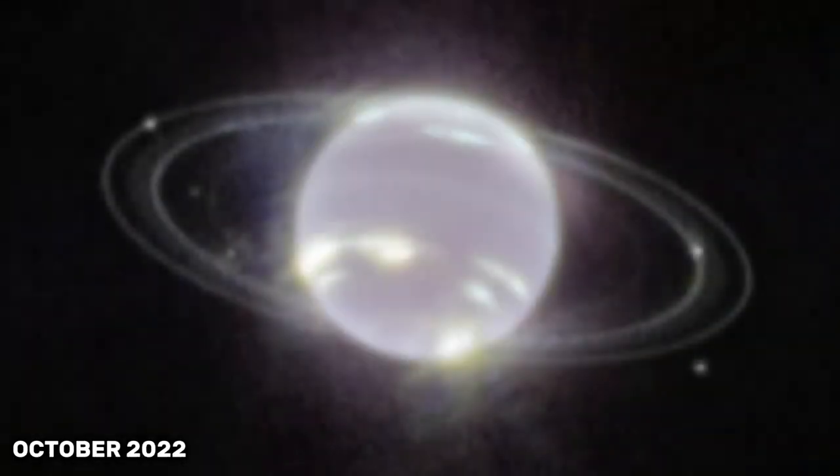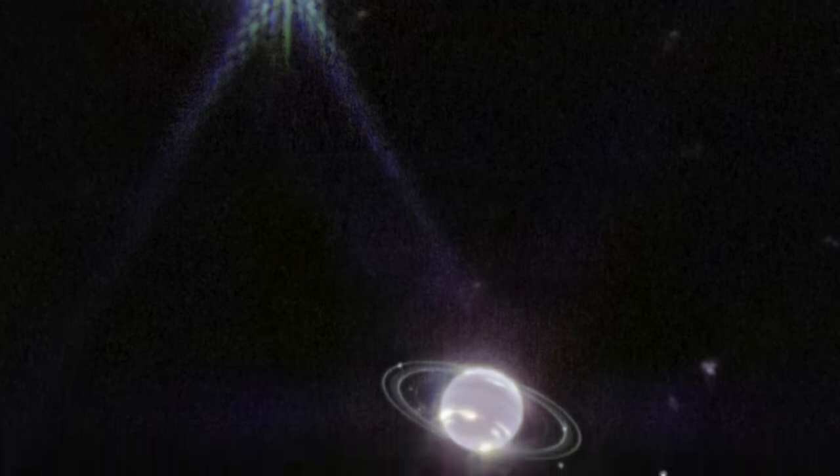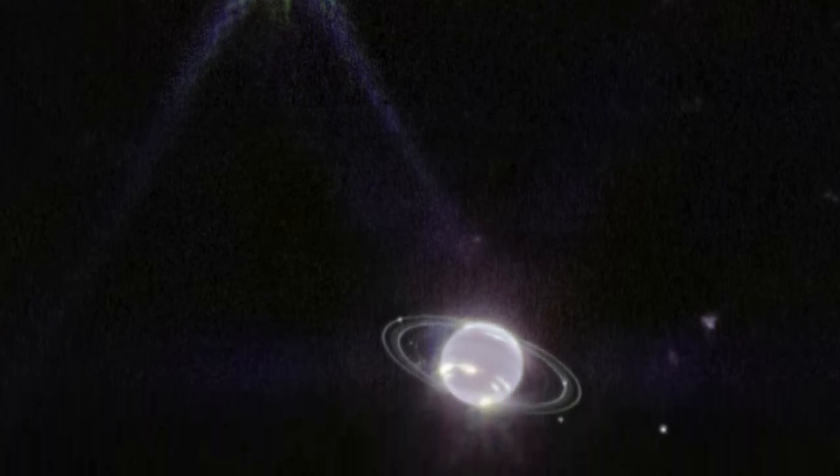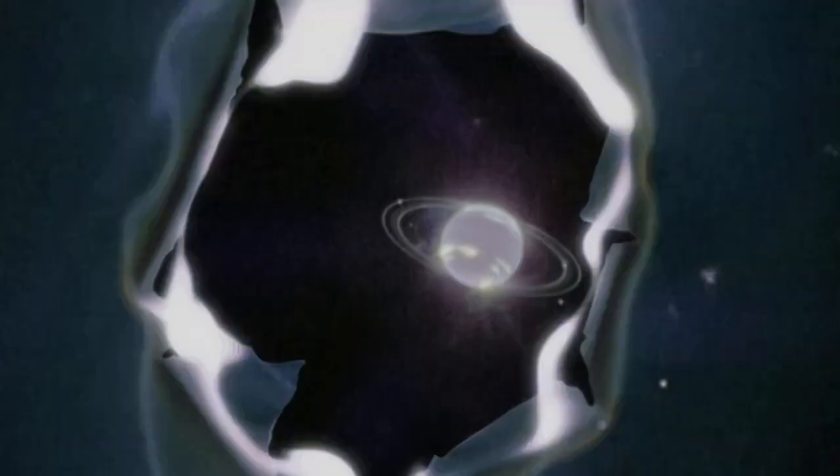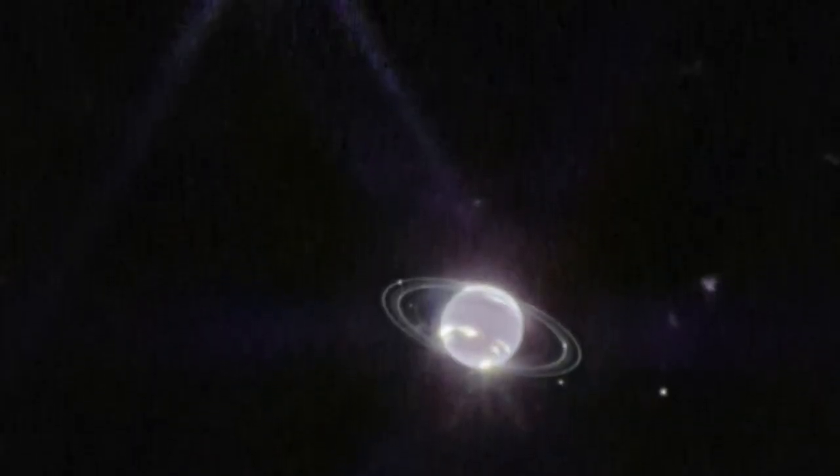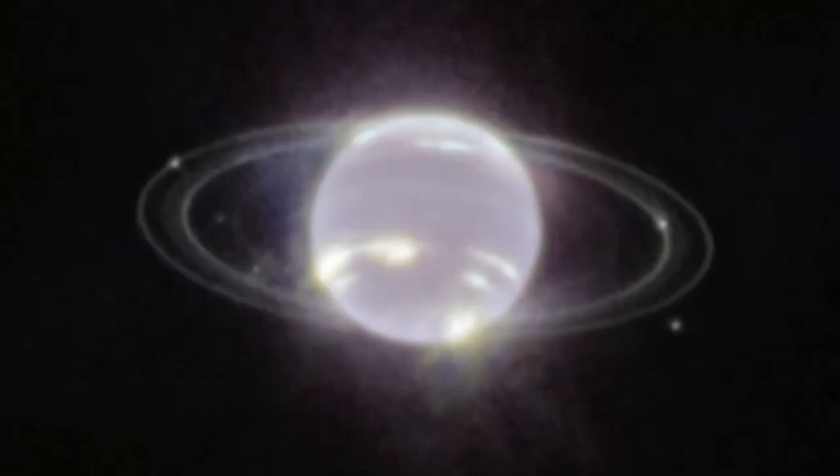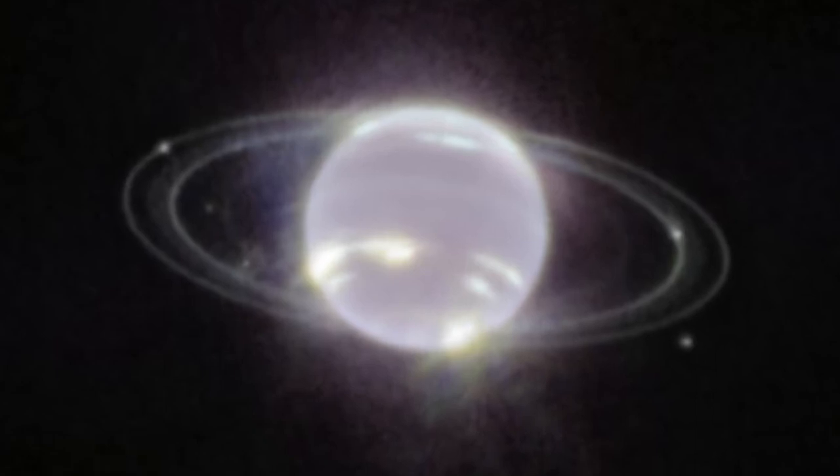In October 2022, the James Webb Space Telescope released the clearest view of Neptune and its rings in decades. Some of these rings haven't been seen since 1989, and others have never been seen at all. The photo was taken with Webb's near-infrared camera and shows the planet's bright rings as well as fainter dust bands. The dust bands are visible as fuzzy particles between the brighter, ice-dominated rings.